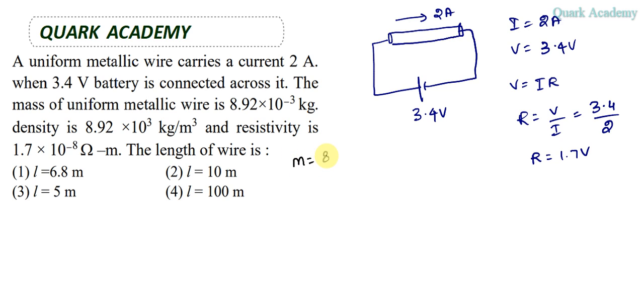The mass is 8.92 × 10⁻³ kg. The density D = 8.92 × 10³ kg/m³, and the resistivity ρ = 1.7 × 10⁻⁸ Ω·m. We need to figure out the length of the wire.